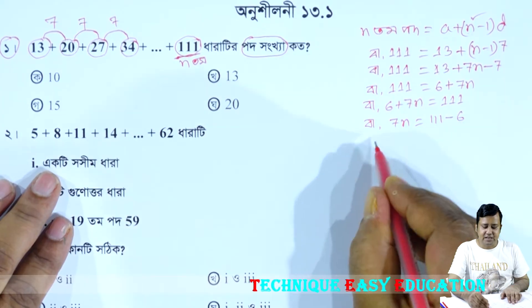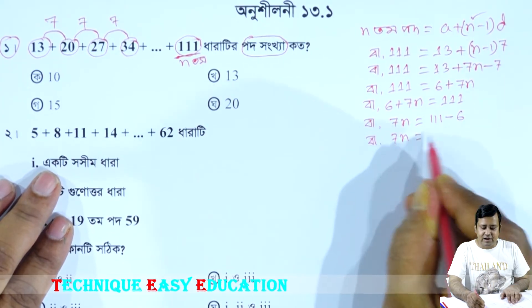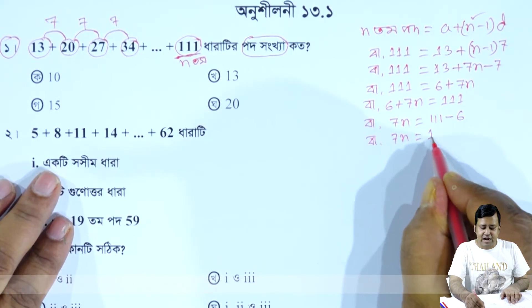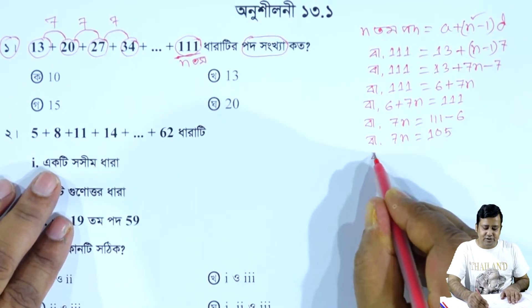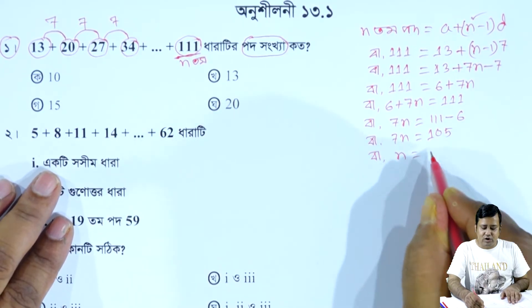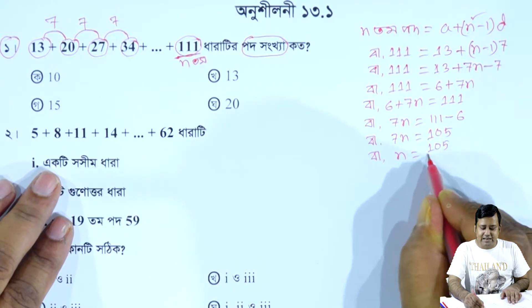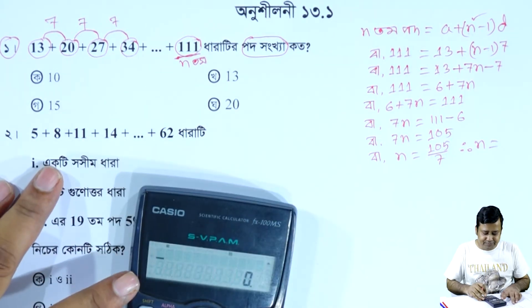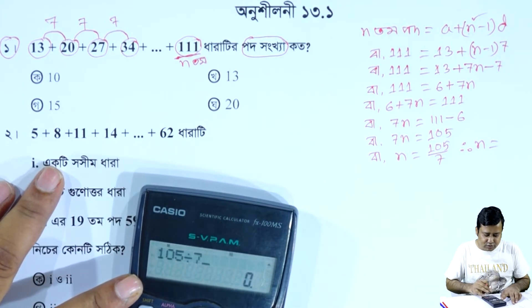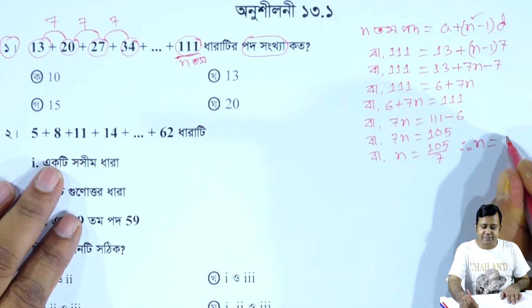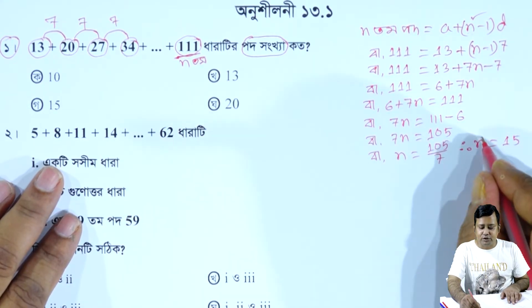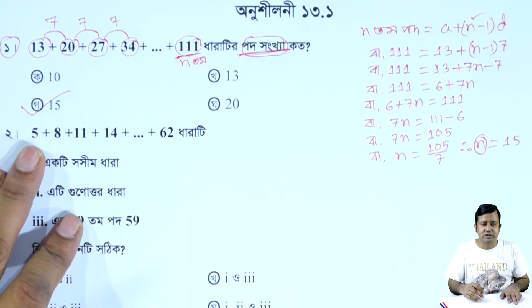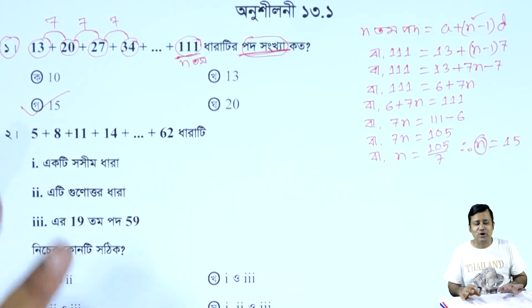Minus 6. So 7n equals 111 minus 6, which is 105. Therefore n equals 105 divided by 7, which equals 15.